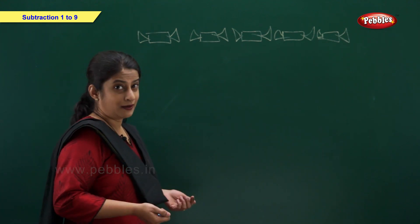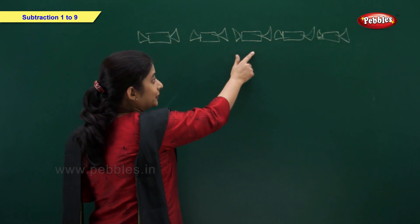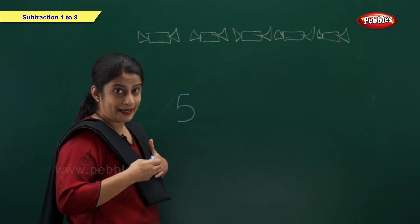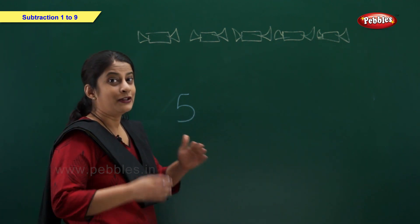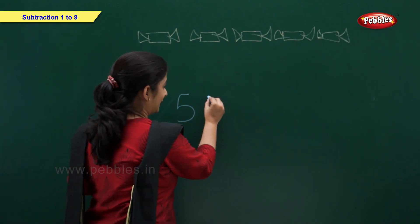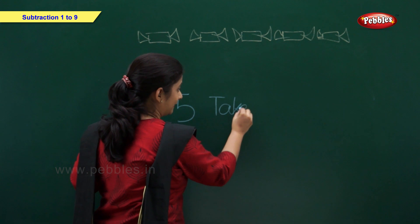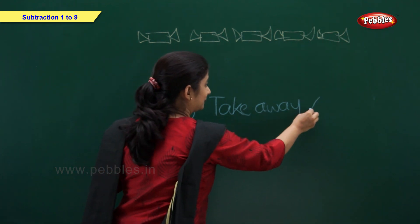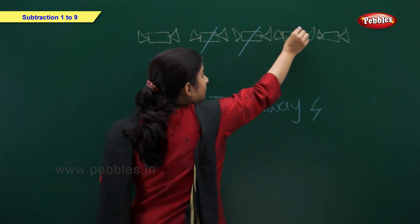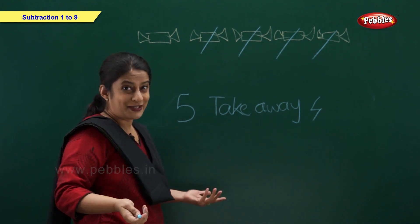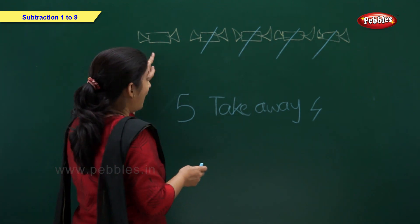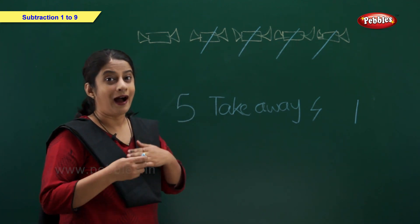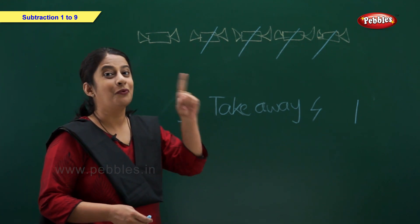I have some chocolates. Let's count: 1, 2, 3, 4, 5 — I have 5 chocolates. I gave 4 chocolates to my friend. So take away 4 chocolates: 1, 2, 3, 4. So how many chocolates left with me? Let's count: 1. I had 5 chocolates, I gave 4, so 1 chocolate left with me.